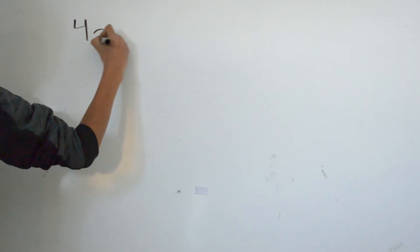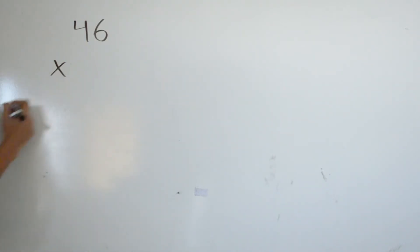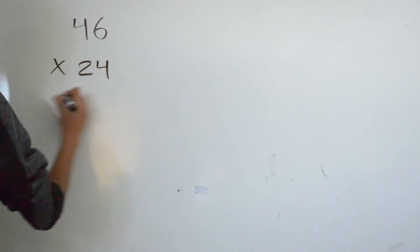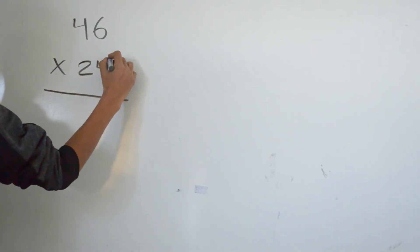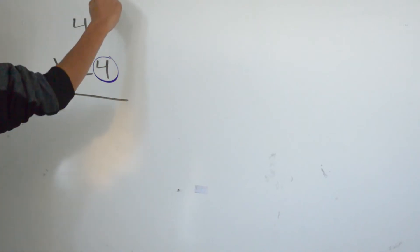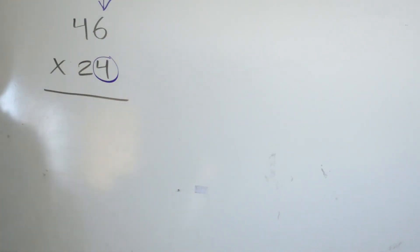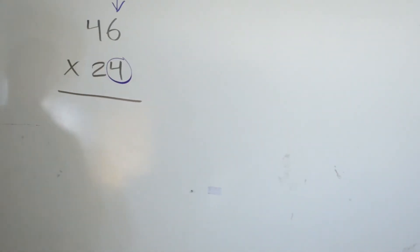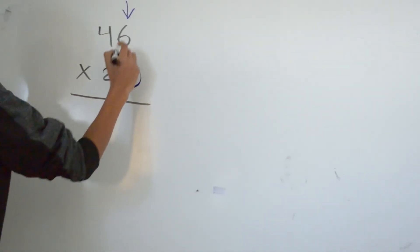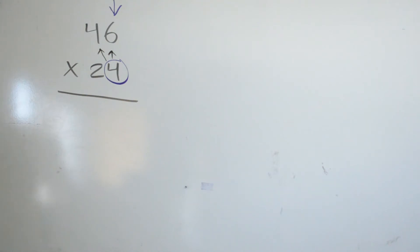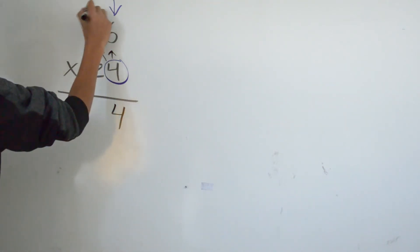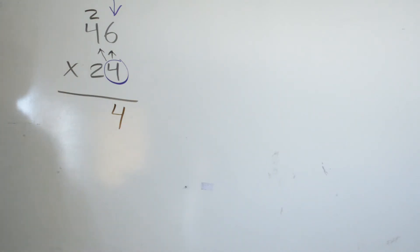For our second example, we have 46 times 24. Same thing we did in the first example — I like to circle our second number from the bottom and add our arrow to our second number on top. So now we multiply from right to left. 4 times 6 is 24. Carry the 2 on top. 4 times 4 is 16, plus the 2 that we carry up is going to be 18.